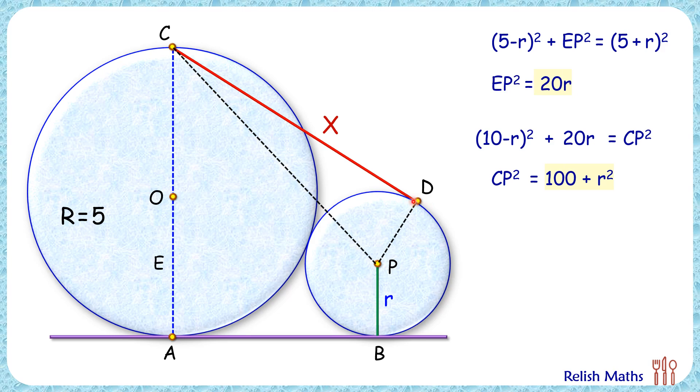Now let's join PD. We know that radius is perpendicular to the tangent, so this angle is 90 degrees. Let's check this triangle CDP. So here by Pythagorean theorem, CD² plus DP² is CP². CD² is nothing but x², and DP² that is your radius r, so this is r², and CP² we have calculated earlier, it's 100 plus r².